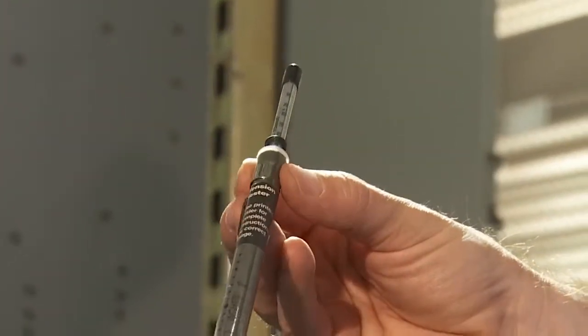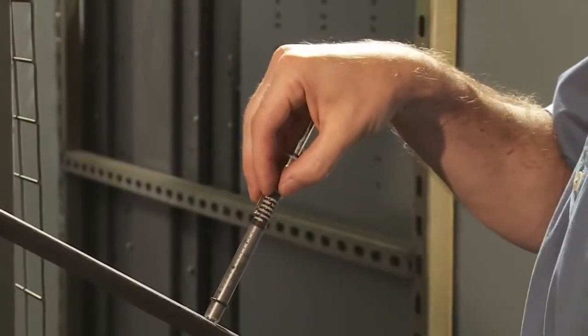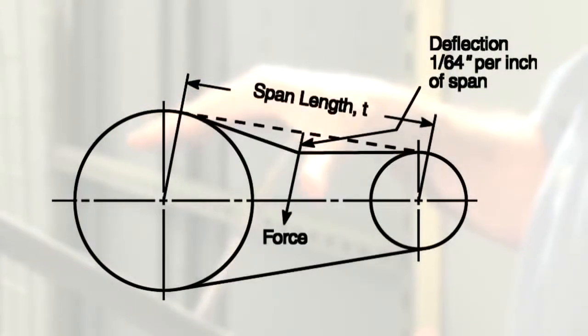To check belt tension using pencil gauges or pull draw scales, deflect the belt at mid-span 1/64th inch per inch of span length with the amount of force specified from a tension formula.